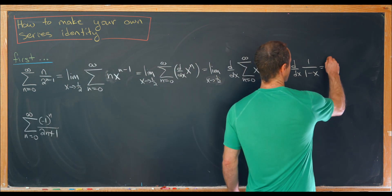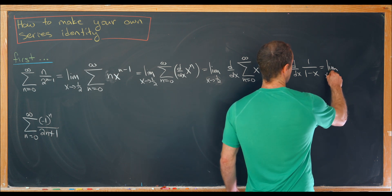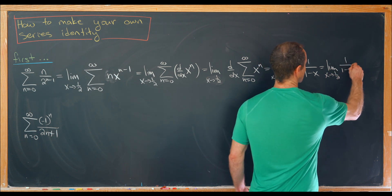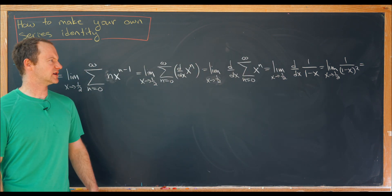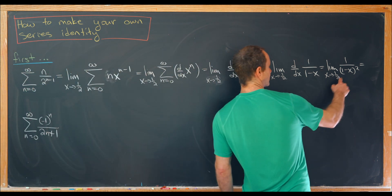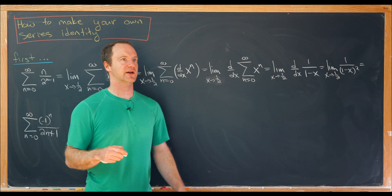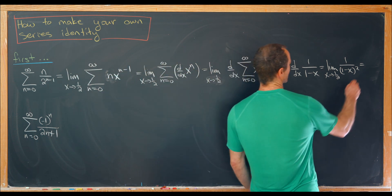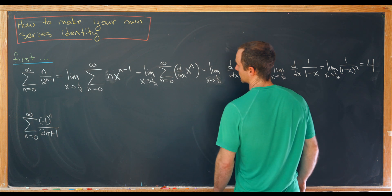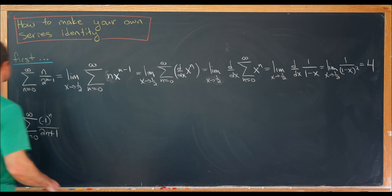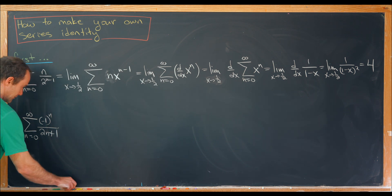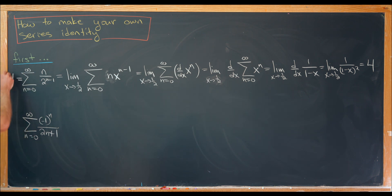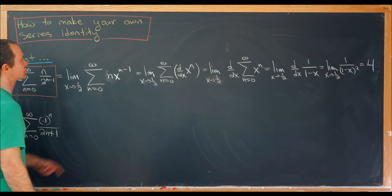Now we take the derivative, leaving us with the limit as x goes to 1/2 of 1 over (1 minus x) squared. You can calculate that derivative using the chain rule. Plugging in 1/2, which we're allowed to do because that function is continuous at 1/2, we get 1 over 1/4 — in other words, we get the number 4. So we know that 4 is equal to this sum. Let's put a box around this, as it will be used to construct our identity.